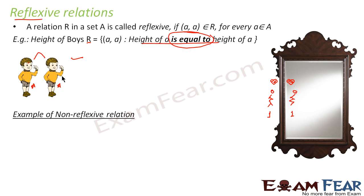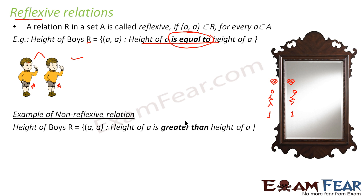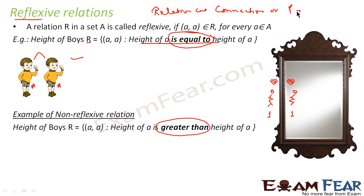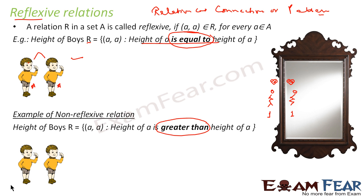Now I'll give you an example of a non-reflexive relation. When I say 'height of A is greater than height of A' — a relation is nothing but a connection or pattern. In the first case the relation 'height of A is equal to height of A' holds, making it reflexive. But 'height of A is greater than height of A' does not hold.